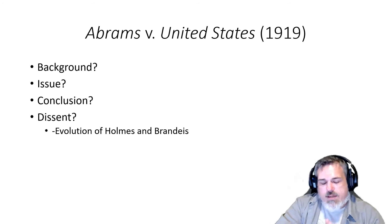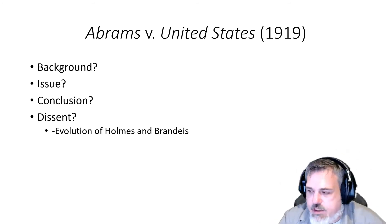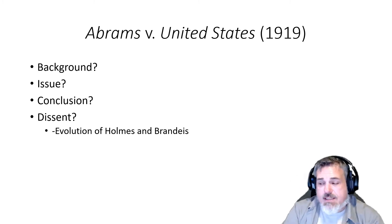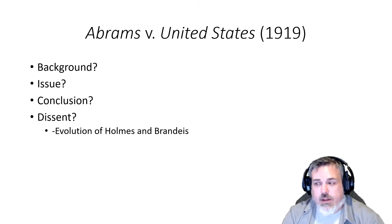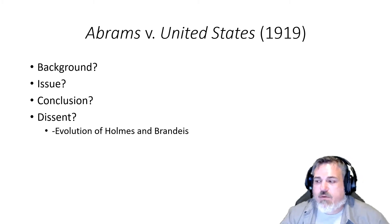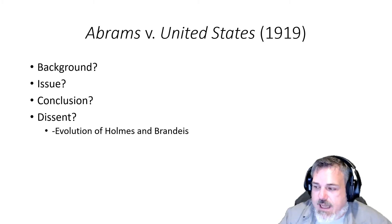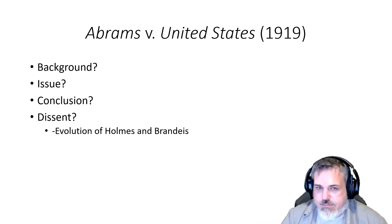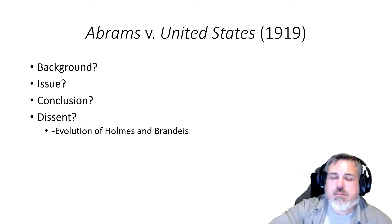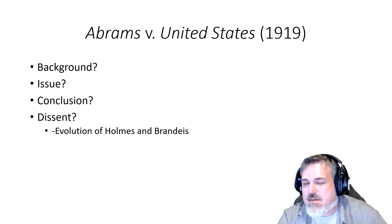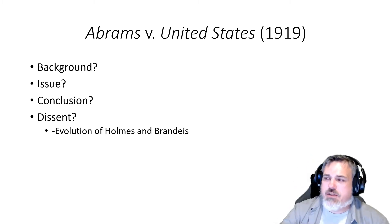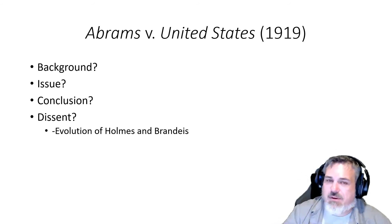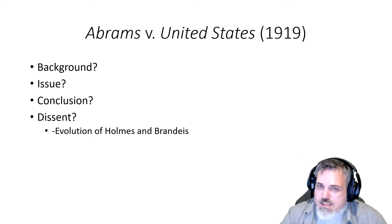The court also makes an important distinction between actions and words. The court says that a technical distinction may perhaps be taken between disloyal and abusive language applied to the form of government and language intended to produce like results directed against the United States government. Simply saying these things probably wouldn't be able to be prosecuted. But they did more than just say — they actually undertook action. They printed up leaflets, handed them out, made sure that other people read it, and communicated their message effectively.